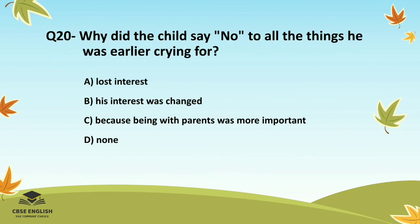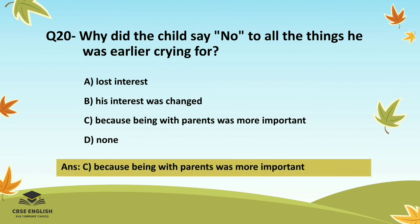Question number twenty: Why did the child say no to all the things he was earlier crying for? Options are: lost interest; his interest was changed; because being with parents was more important; or none. The correct answer is because being with parents was more important.